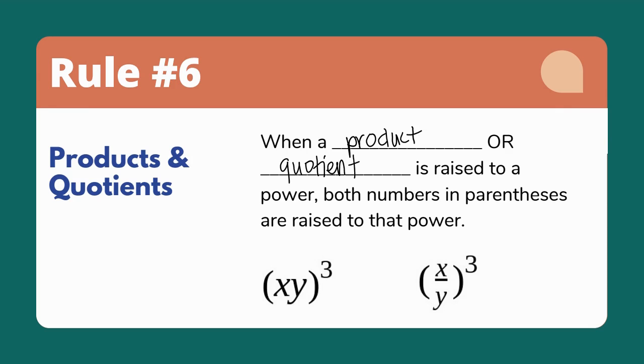both numbers or all numbers inside of the parentheses get raised to that power. So x times y to the third becomes x to the third, y to the third.